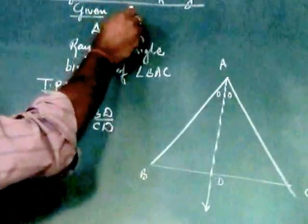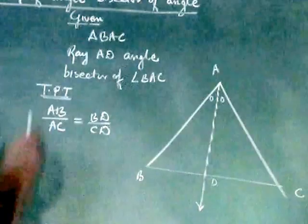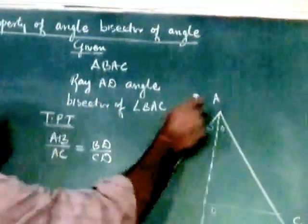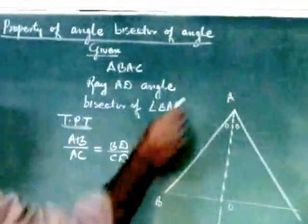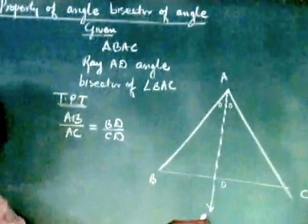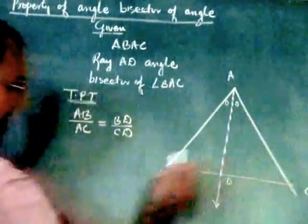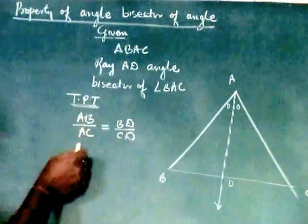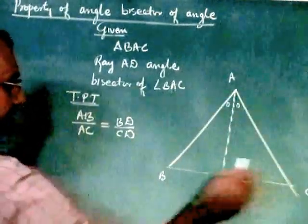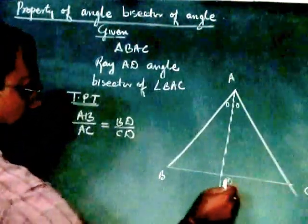Property of Angle Bisector of Angle. Given triangle BAC, ray AD is angle bisector of angle BAC. We are supposed to prove AB upon AC is equal to BD upon CD.